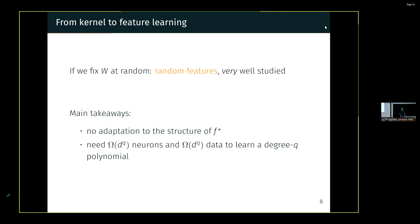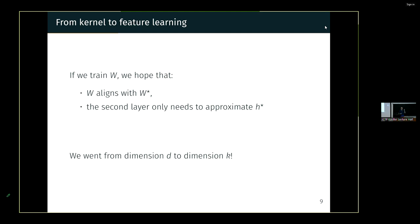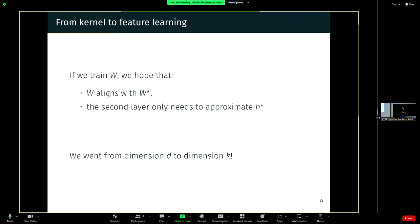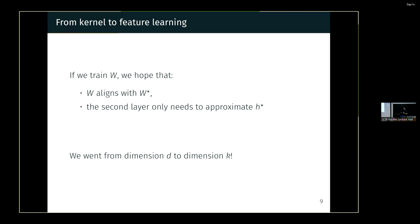On the other hand, if we train the first layer, we hope that the first-layer weights will align with the low-dimensional structure of the function. The second-layer weights then fit the low-dimensional function h*, which is a k-dimensional function instead of a d-dimensional one. This effectively reduces the hardness of the problem from fitting a function in d dimensions to fitting one in k dimensions, which is much easier.